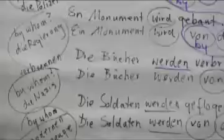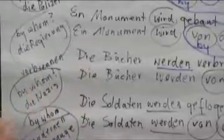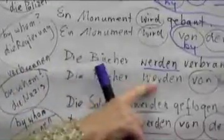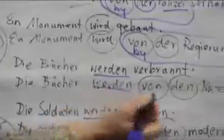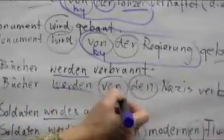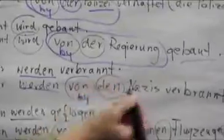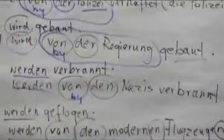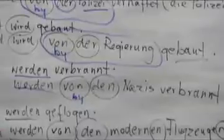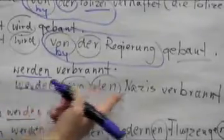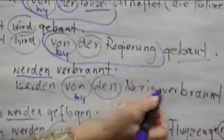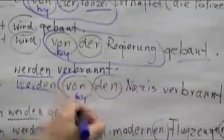Now by whom are they being burned? So we say die Nazis. Die Bücher werden von den Nazis verbrannt. They're being burned by the Nazis. It's part of the history you're learning in your chapters.